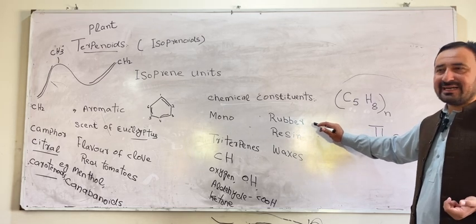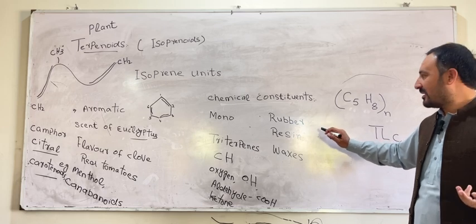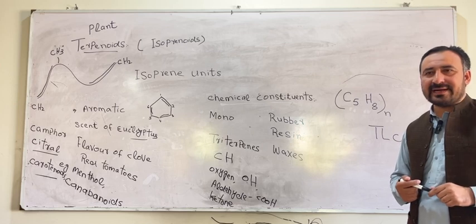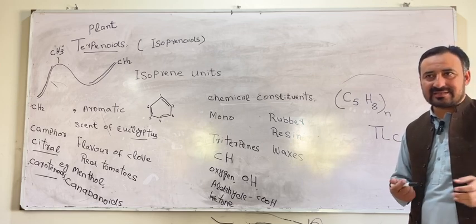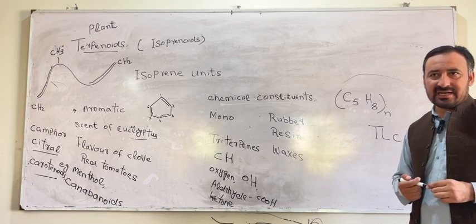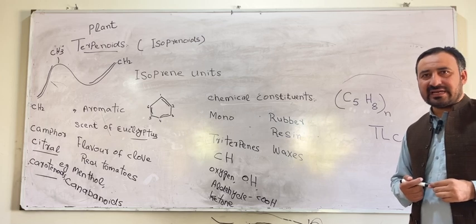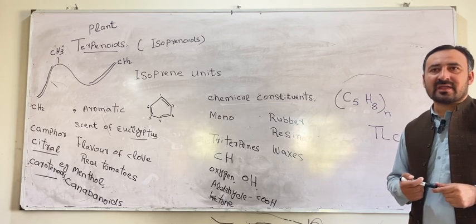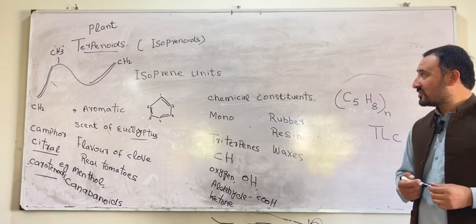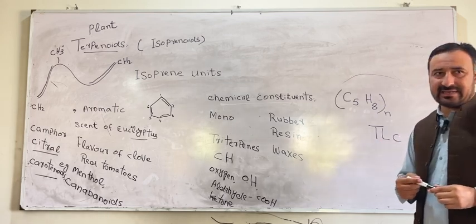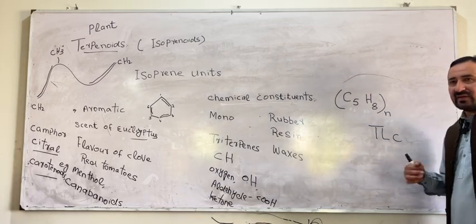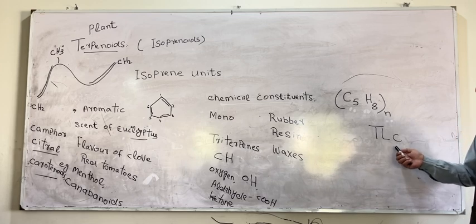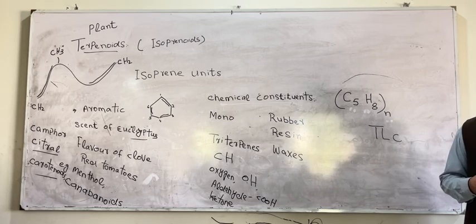Ficus elastica is a common example of rubber. Resin can be obtained from conifers such as Pinus longifolia, Pinus roxburghii, Pinus gerardiana, Pinus wallichiana, etc. Waxes, for example, are obtained from honeybee wax. We can isolate and identify the terpenoid concentration by a method known as thin layer chromatography.